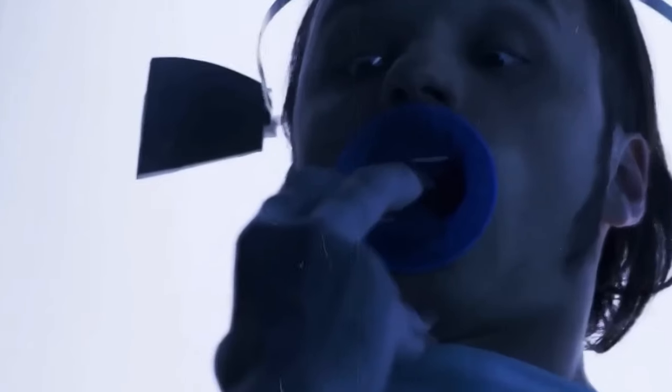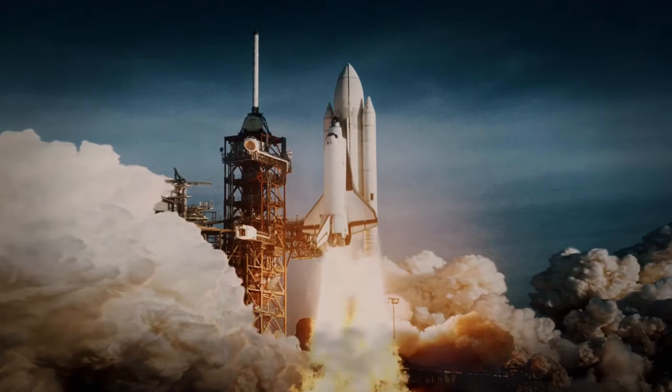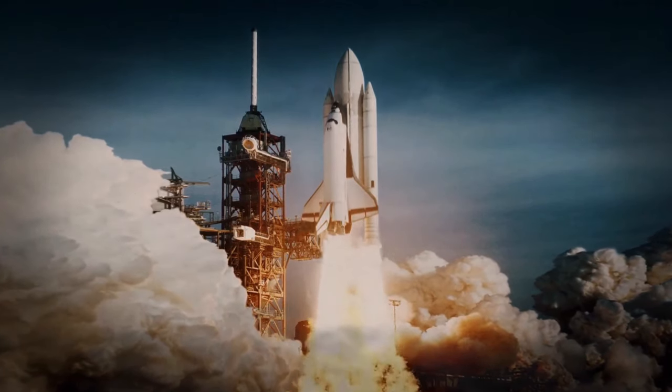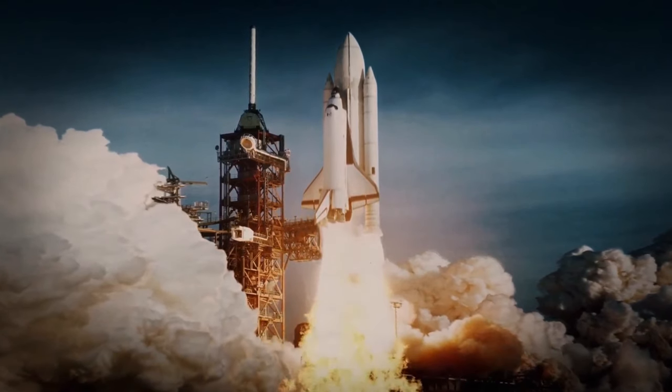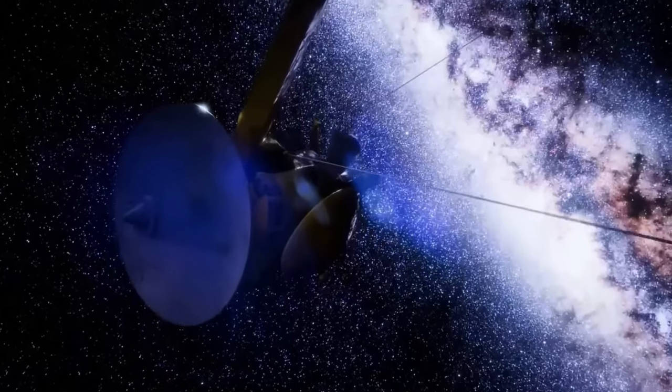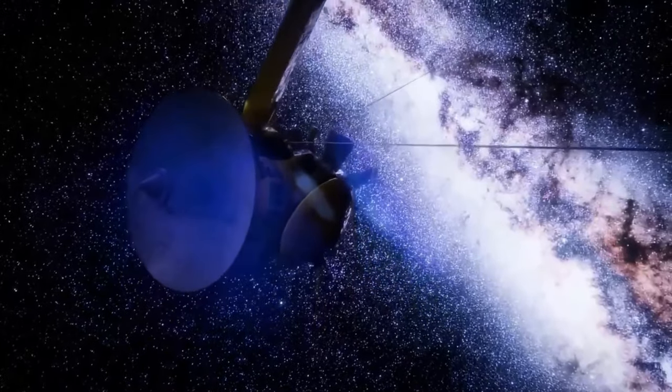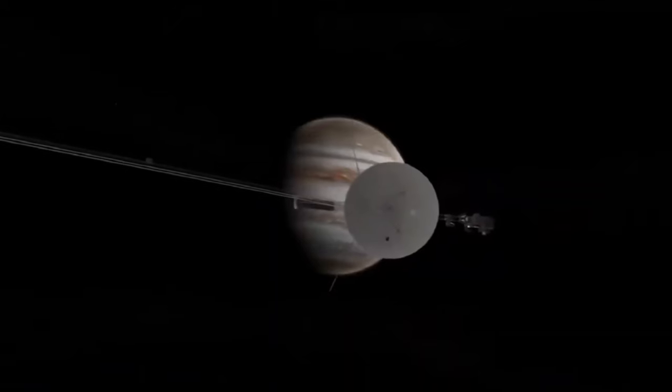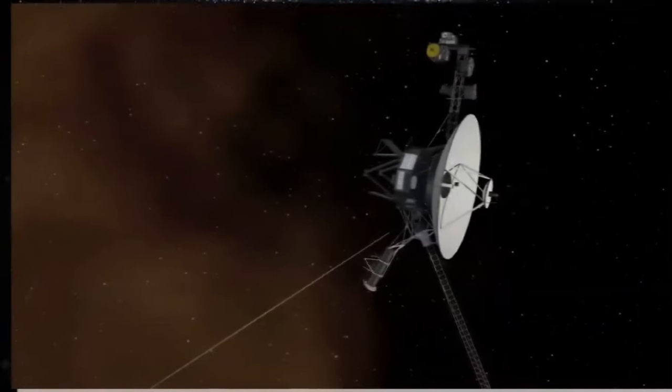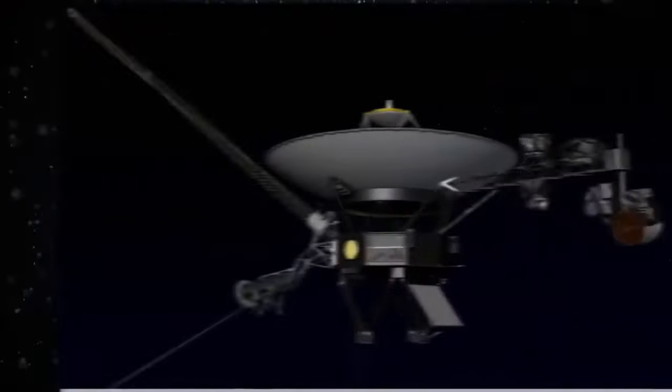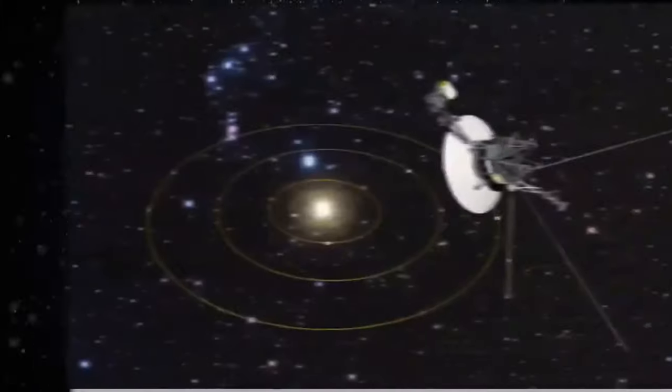Voyager 1 and 2 employed state-of-the-art technology, including scientific instruments like the ultraviolet spectrometer, cosmic ray system, magnetometer, imaging science subsystem, high-gain antenna, and stabilization gyroscopes. These instruments enabled the probes to study various entities in space, from planets and stars to magnetic fields and radiation.